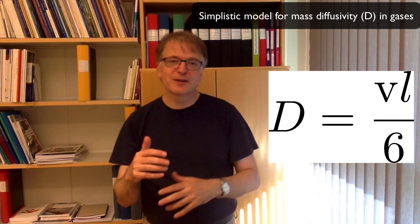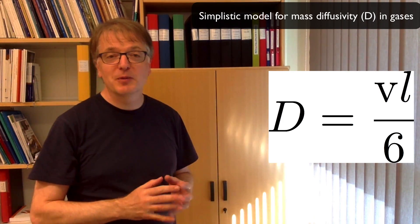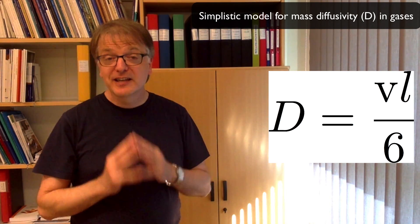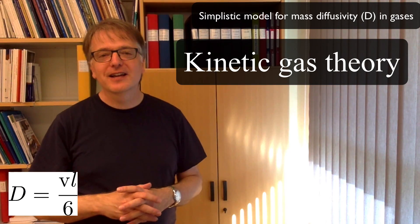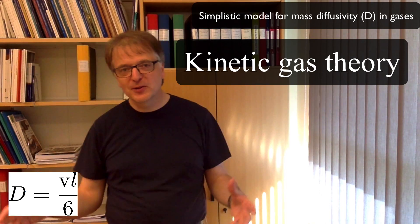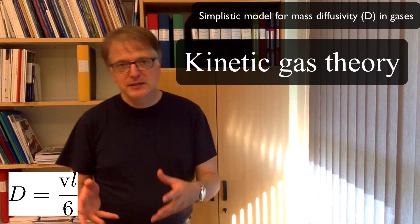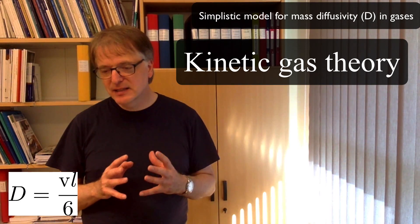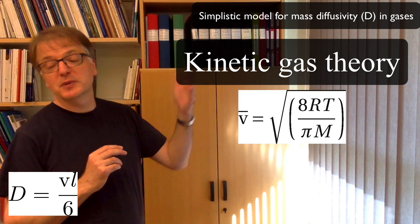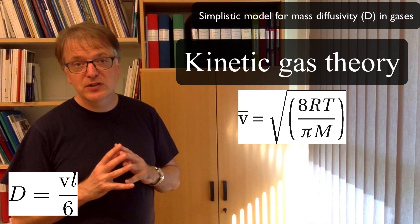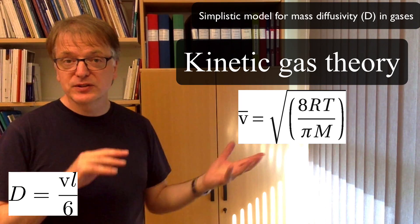Now we do what they do in television when they cook something advanced. I will take out something that is already prepared. The kinetic gas theory. The kinetic gas theory is rather complex. It has to do with the distribution of velocities in gases and it's rather intricate. But what kinetic gas theory says is that the average molecule velocity can be expressed like this. So it's a function of the gas constant, the temperature, the molar mass and you see there is a square root there.